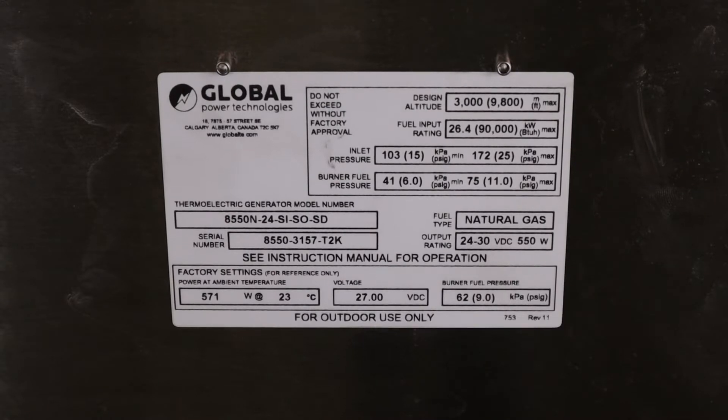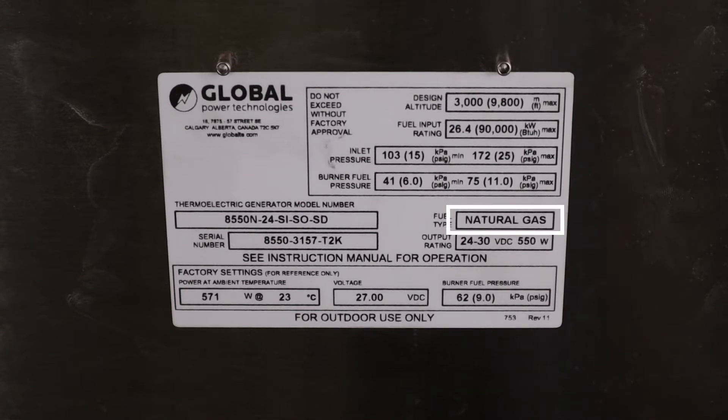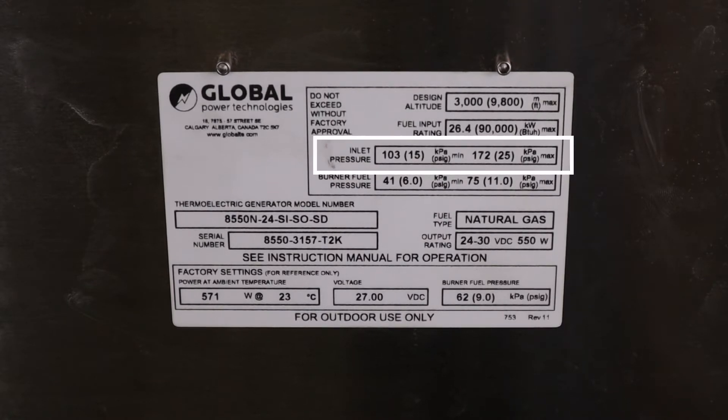The fuel pressure supplied may need to be adjusted for altitude. Figure 7 in the manual shows the correction for variation from the factory altitude of 750 meters or 2,460 feet. Be sure to use only the type of fuel indicated on the data plate. The maximum inlet fuel pressure must never exceed 172 kPa or 25 psi.